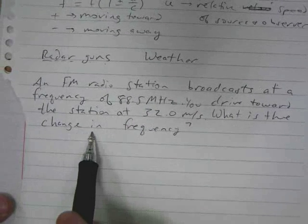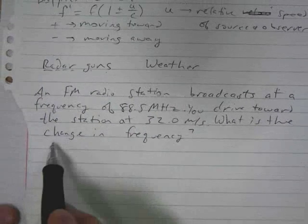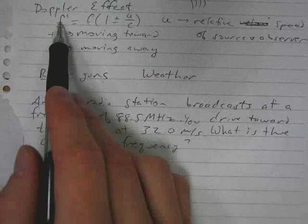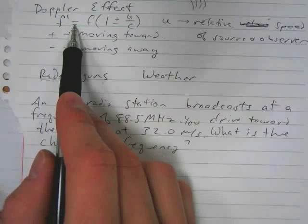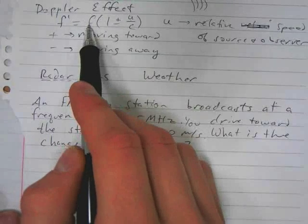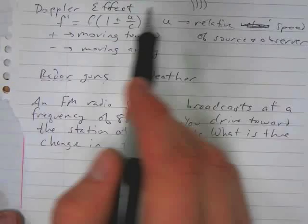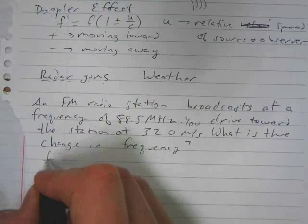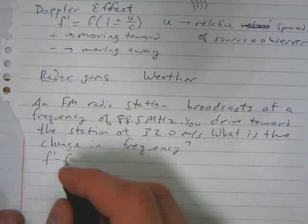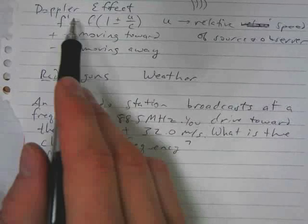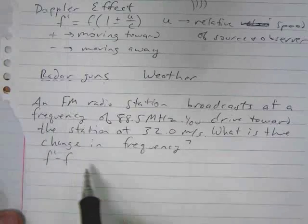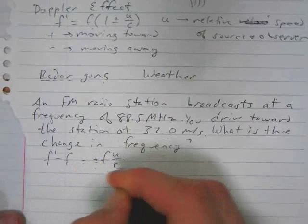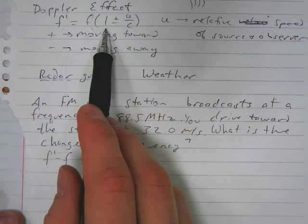A lot of times you're going to be asked about the change in frequency, not necessarily what the new frequency is. If we look at this equation and rearrange it, if we distributed this F, we'd have frequency times one plus minus stuff. So the change in frequency is F prime minus F. If we distribute the F and subtract this over, then we get that this is just equal to plus or minus F times u over c. The one kind of drops out if we're asked for change in frequency.